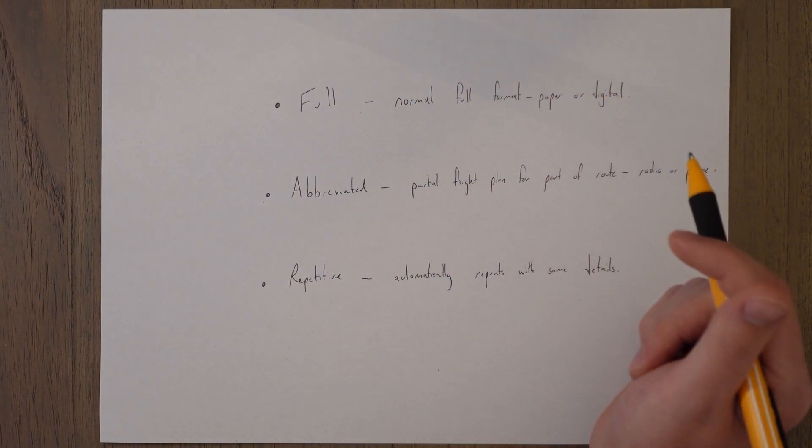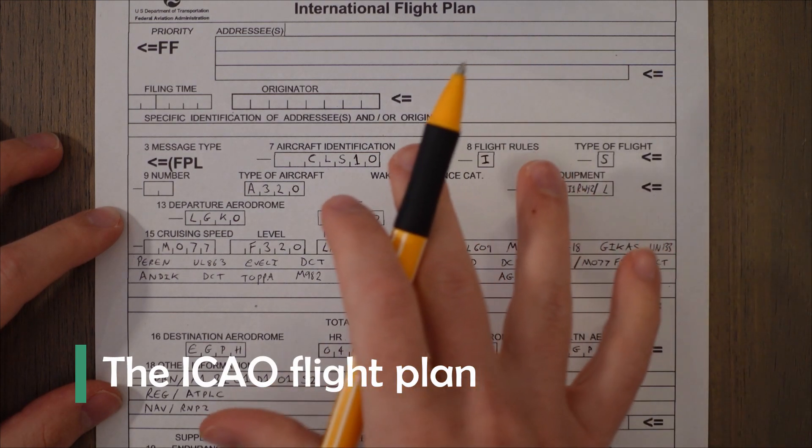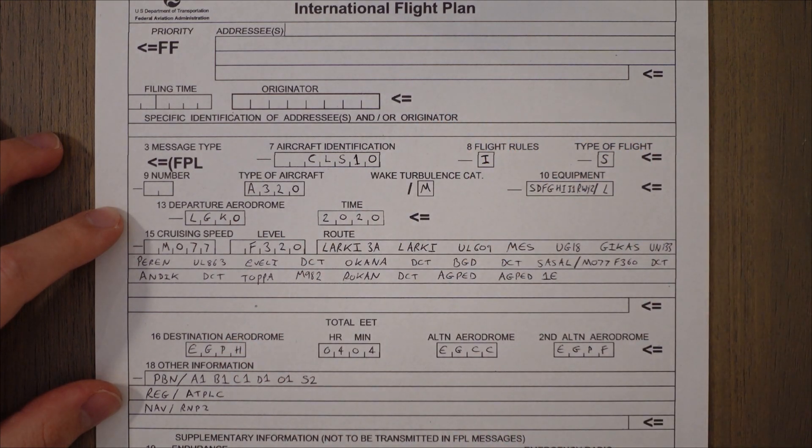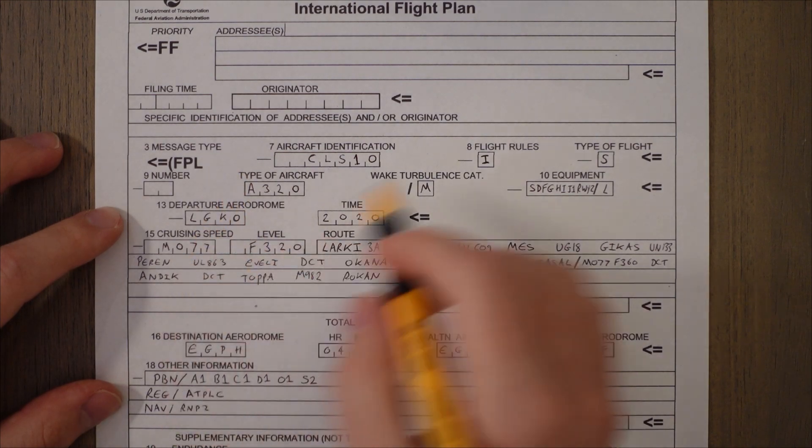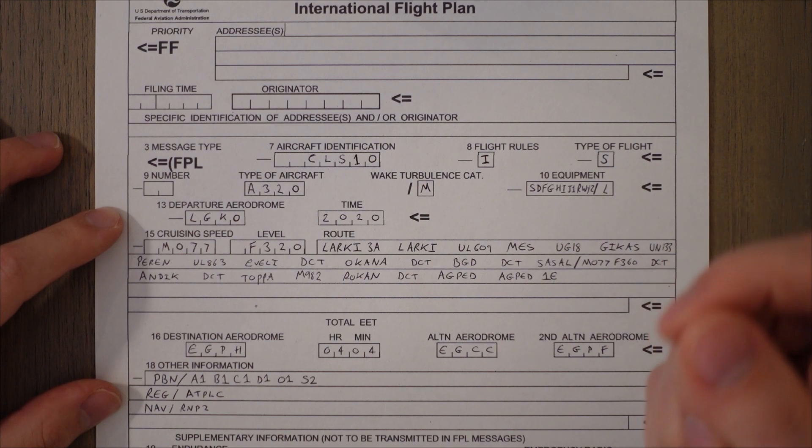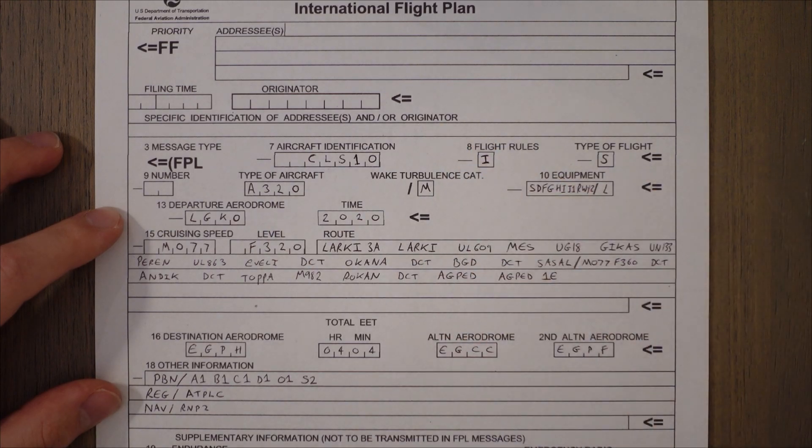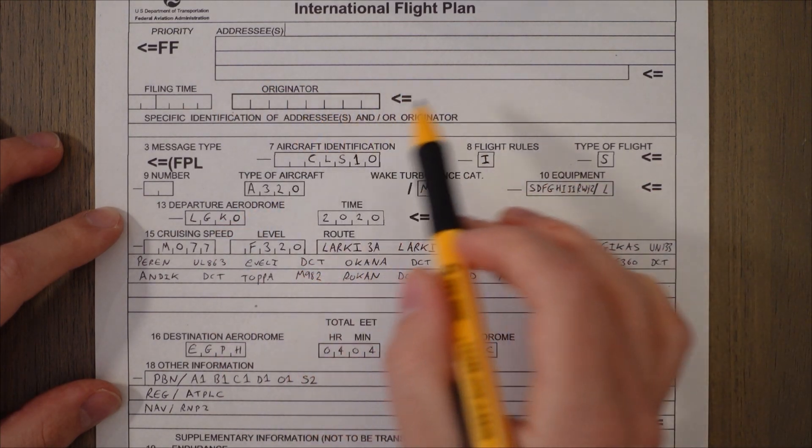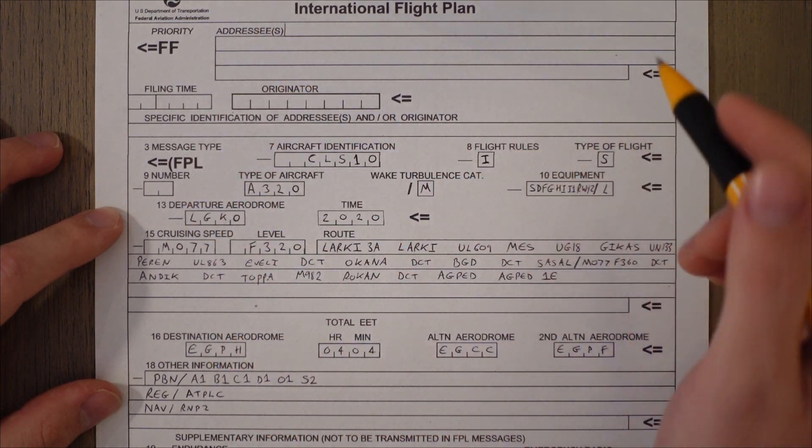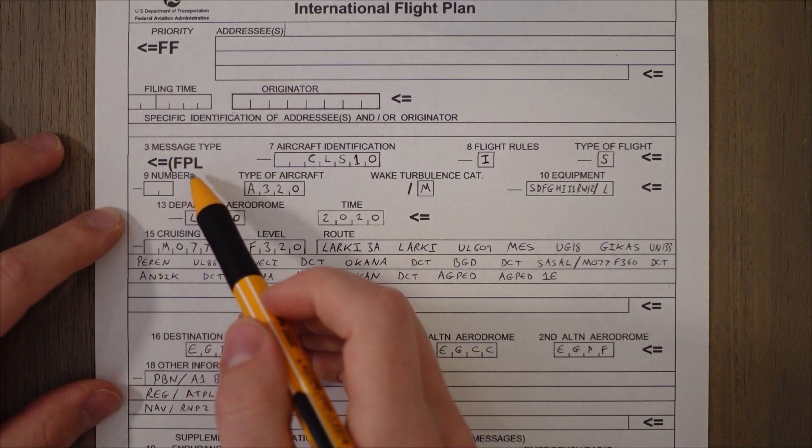So this is what the ICAO flight plan looks like in its paper form. In digital form these boxes will be drop down arrows or things you can type in. As you can see there's lots of boxes to fill in and they're all numbered so let's just work our way down. Remember to fill things in using capital letters and all flight times are in UTC not local if you're doing this manually. Up the top we just have general information about the address, time of filing, and then as we go down the page we can see that the message type is FPL meaning full flight plan.